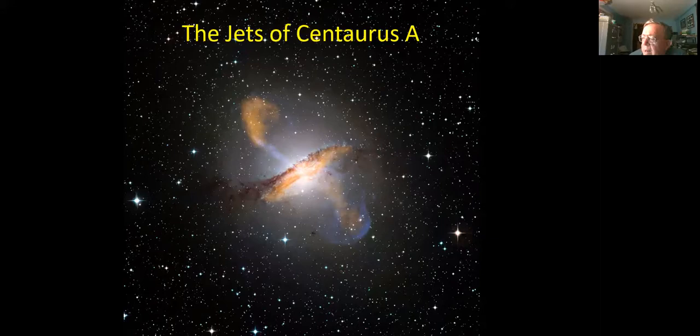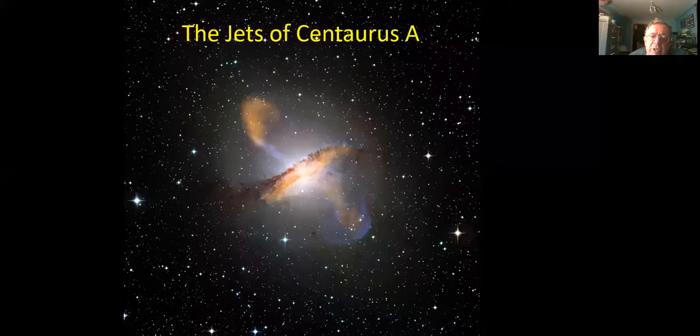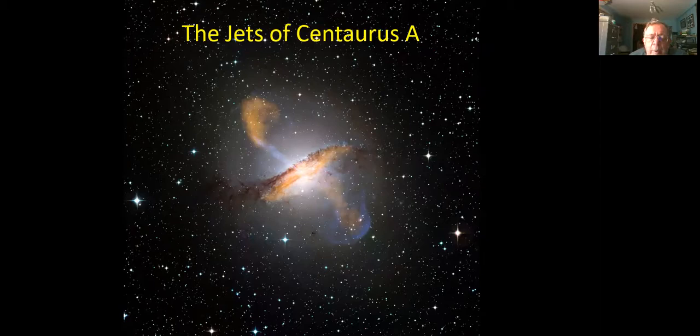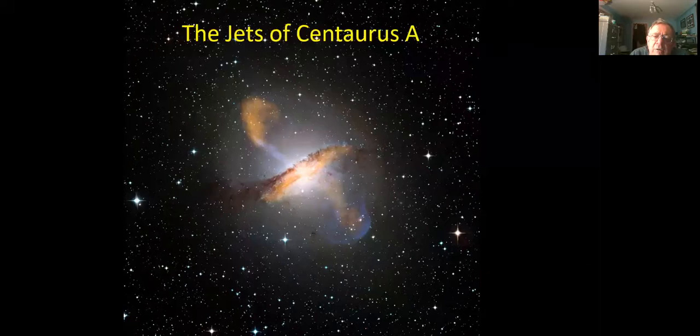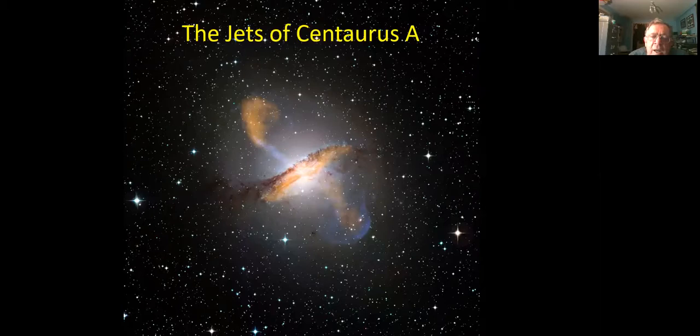Here's a galaxy, Centaurus A, that has a feeding black hole in the center. Material spirals down inside and gets torn apart, caught up in the magnetic field and shot out along the north and south magnetic fields, creating these enormous lobes that you can see either side of the main ring of the galaxy.